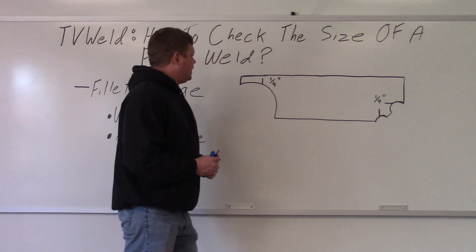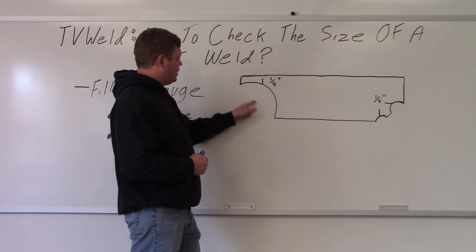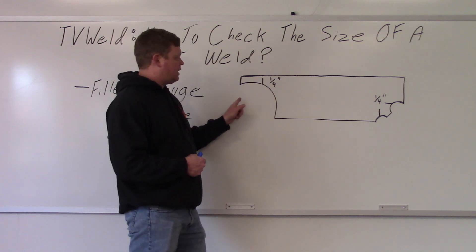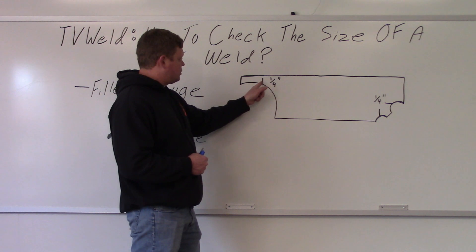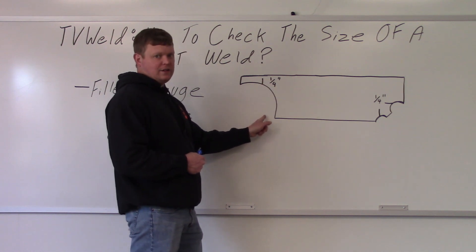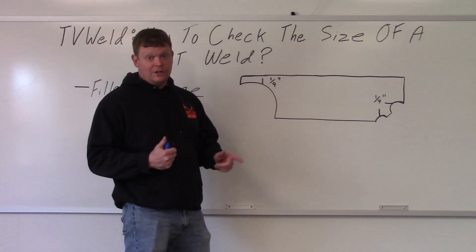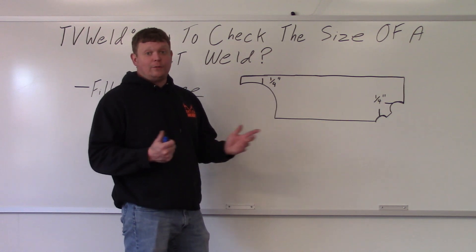So the fillet weld gauge, the size is right here. And you put the fillet weld right in here. And I'll show you a drawing of that here in a second as well. But you line this line right here up with the toe of one of the legs of the fillet weld. That's why it's important to know the parts of the fillet weld. Because if you don't know where the toe is and the leg is, you have no idea what I'm talking about right now.